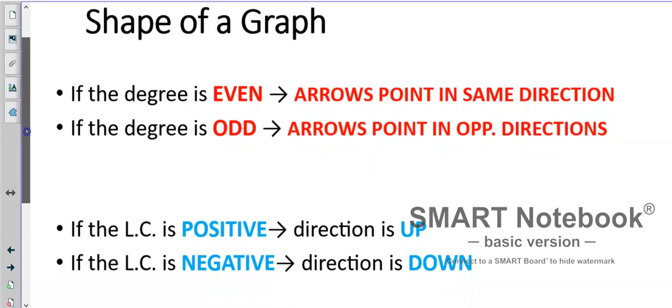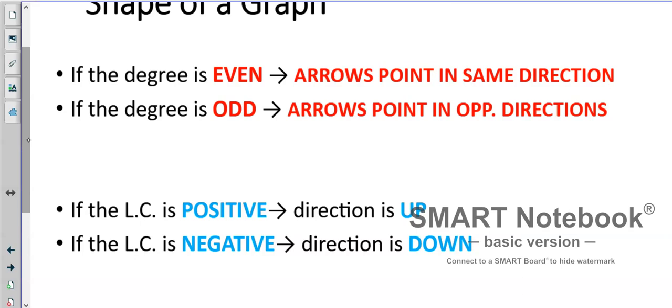The shape of the graph. If the degree is even, like the one we just had, the arrows point in the same direction. Okay? So if you think about it, think about a parabola. A parabola is a quadratic. Right? And so we would have something like that or something like that. Well, when we get up to a 4, like we just saw on the previous page, it's going to be like a W or an M. If it's odd, arrows are pointing in opposite directions. So think about a linear equation. A linear equation is x to the 1. We would have this or that, positive and negative. Cubic, which is 3, positive and negative. And 5 and 7, same thing. It just gets a little more complicated, but that's the general shape of it.